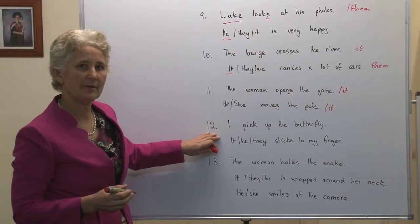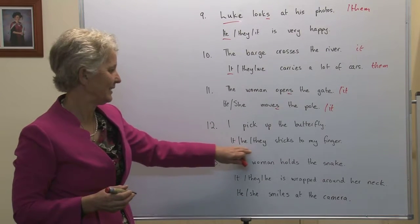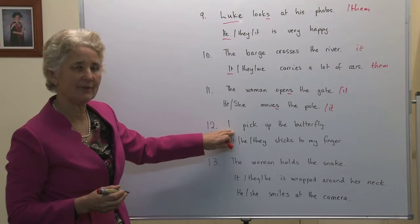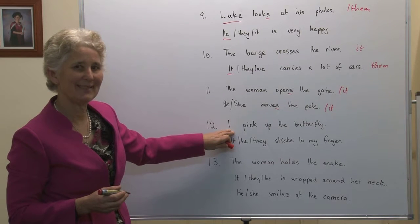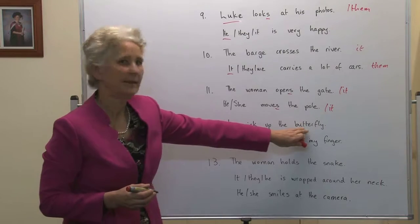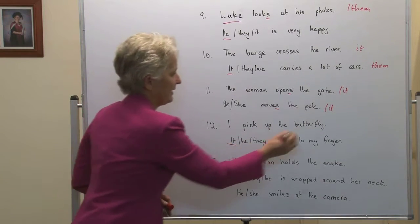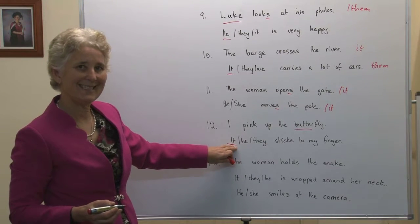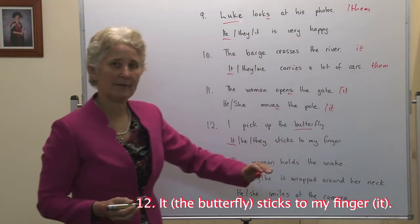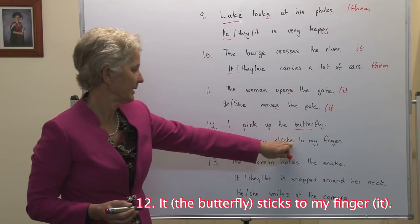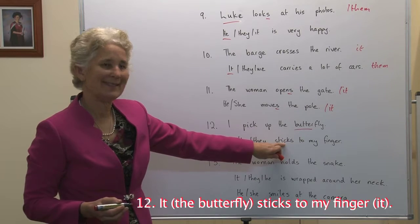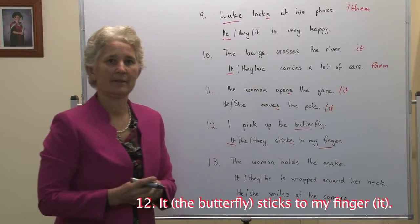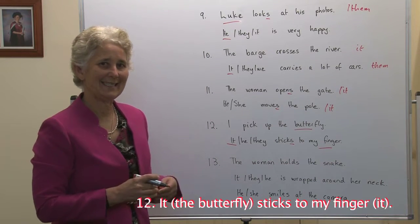Number twelve: I pick up the butterfly. It, he or they sticks to my finger. Pearl is referring to herself — I, in the first person, singular, pick up the butterfly. But it sticks to my finger. We clearly need it to refer to the butterfly. The butterfly becomes the subject — it sticks to my finger. Sticks, once again, with the third person s, singular, present tense. If we wanted to replace my finger, third person object, it sticks to it.